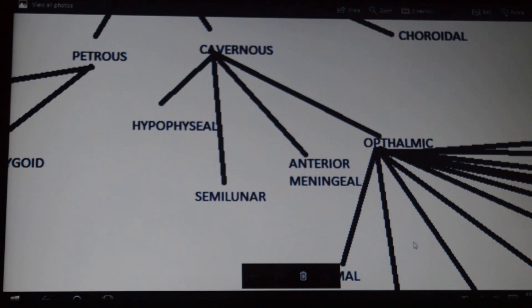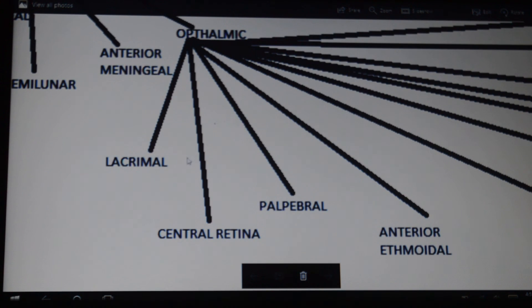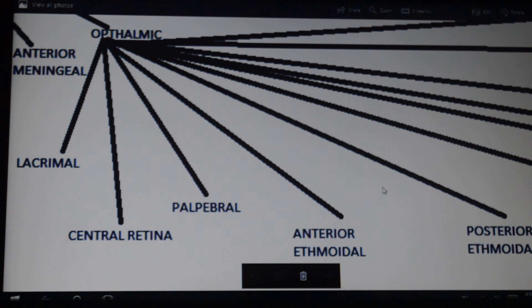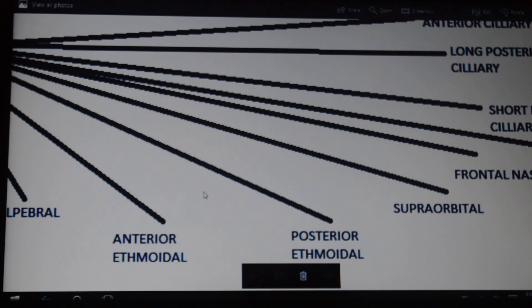The ophthalmic artery is subdivided into many parts. First comes the lacrimal, supplying blood to the lacrimal glands of the eye. The central retinal artery supplies the retina of the eye. The palpebral supplies blood to the palpebral muscles, and the anterior and posterior ethmoidal arteries.